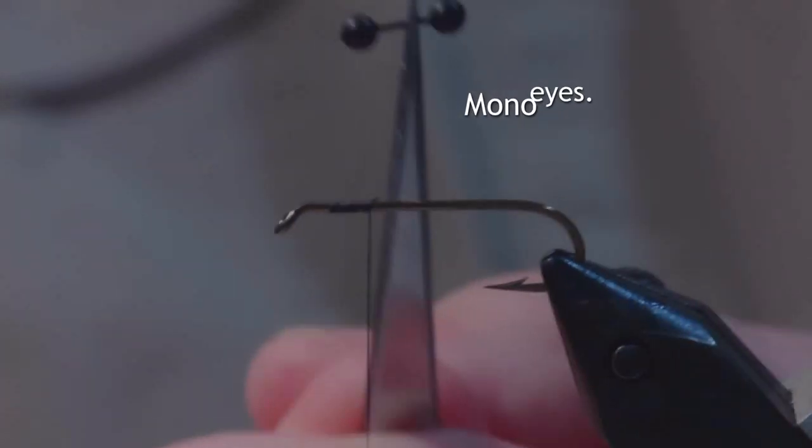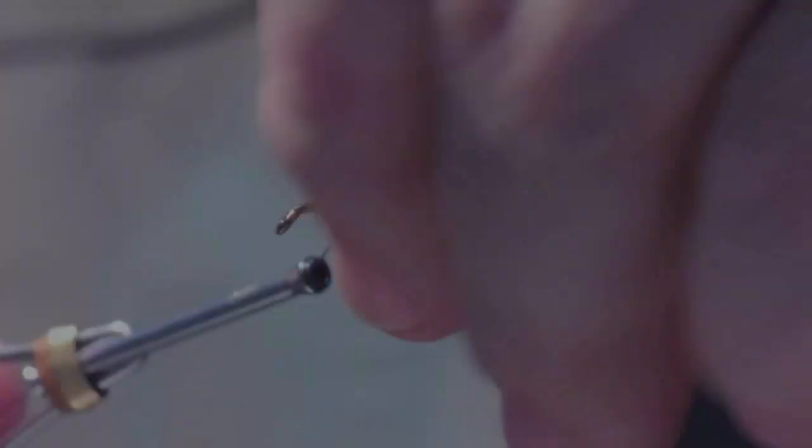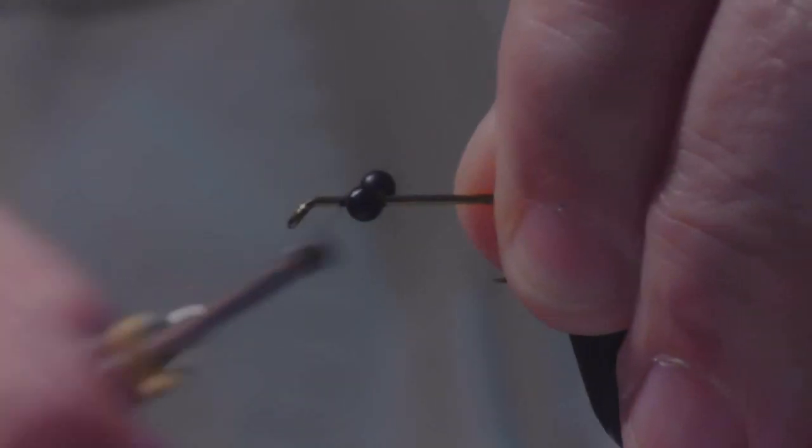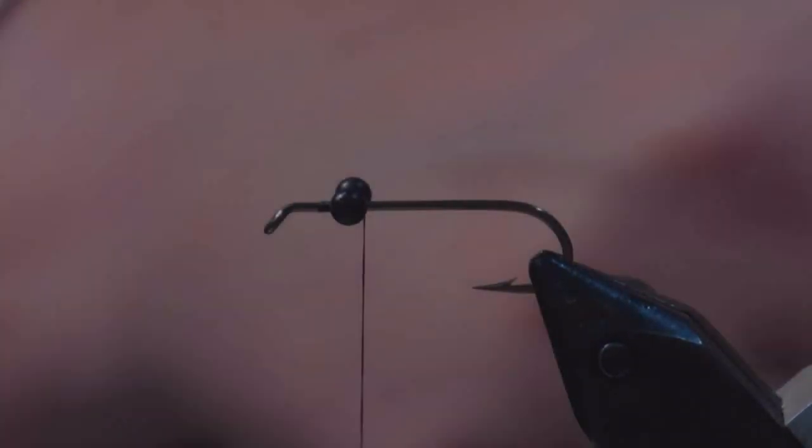You've seen these, I know you have—mono eyes. These are the large ones, and you put them not exactly too close to the front, but the front part. Would bead chain work for this? You could use bead chain. I've used small weighted eyes, anything like that.